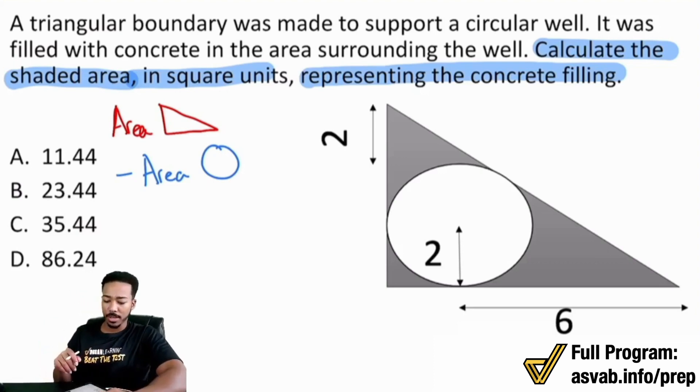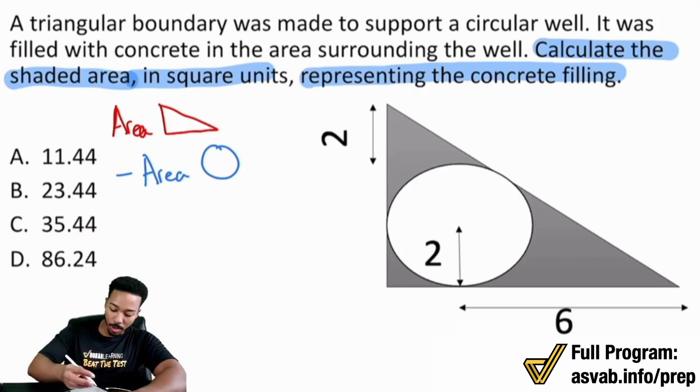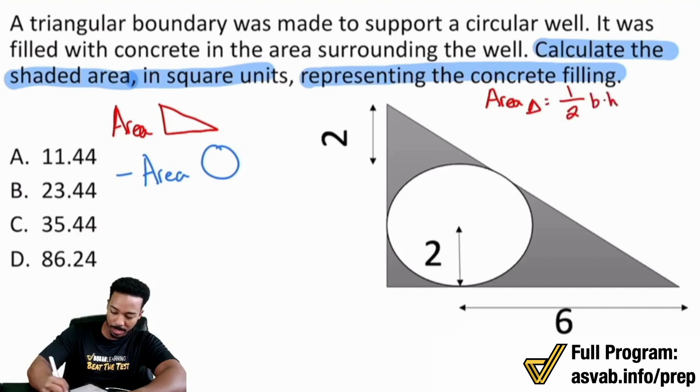So how are we going to take care of this? Well, nice and easy. We're going to remind ourselves of the area of a triangle first. So the area of a triangle, remember that the area of a triangle will be one half of its base times its height.